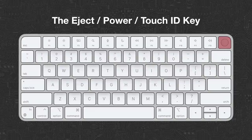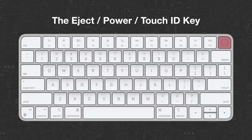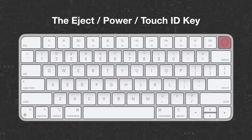That leaves us with one last key — one that's evolved over time. Originally at the top right corner of the keyboard there was an eject key to eject media like a CD-ROM or DVD. It's also been used as a power key to turn your Mac on or off by holding it. But the most recent evolution of this key is now as a Touch ID key — you'll find it on the latest MacBook Airs and on the new keyboard Apple has for the iMac. So this works as a power key and also has Touch ID to make it easier to enter passwords.